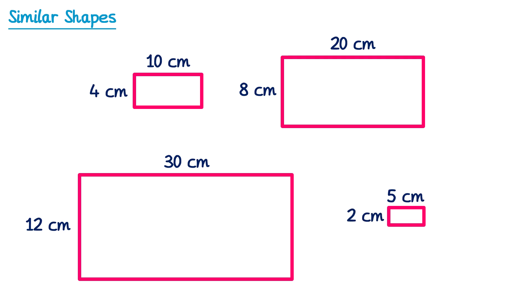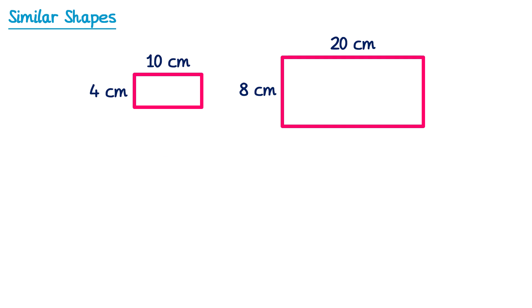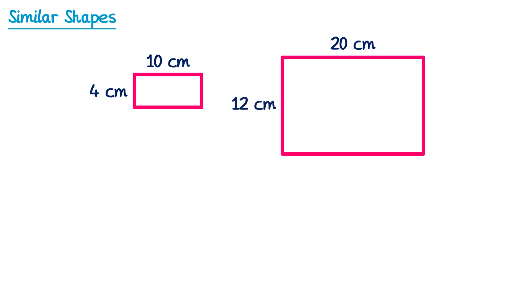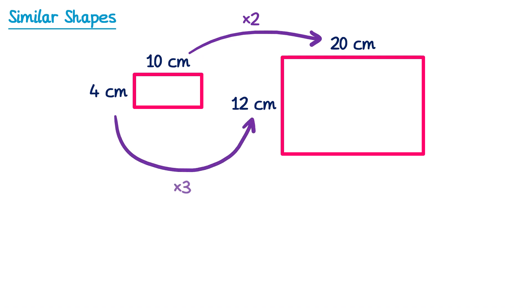So all of these shapes are mathematically similar since they're all enlargements of each other. If we return to the original two rectangles and change the second one so the height is 12 instead of 8, these shapes would not be similar. The scale factor for the width is 10 to 20, multiplied by 2, but for the height it's gone from 4 to 12, multiplied by 3. It's important that when you enlarge a shape to make it similar, you multiply all of the lengths by the same number — so these rectangles are not similar.